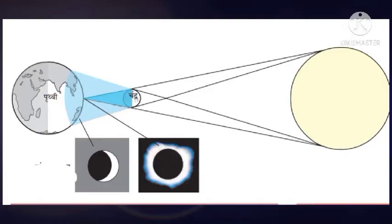When the moon comes between the earth and the sun, a solar eclipse takes place, and the shadow of the moon falls on some part of the earth. It seems that the sun is covered by the moon — that is the solar eclipse. There are three types of solar eclipse, and it occurs on the night of the new moon. Where the umbra falls, a total eclipse is seen; where the penumbra falls, a partial solar eclipse is seen; and in some regions, an annular eclipse can be seen.